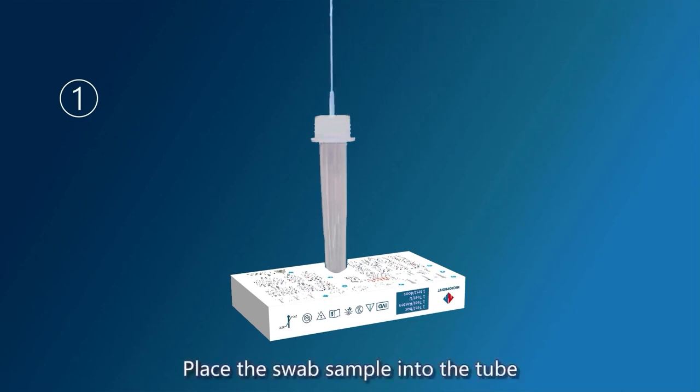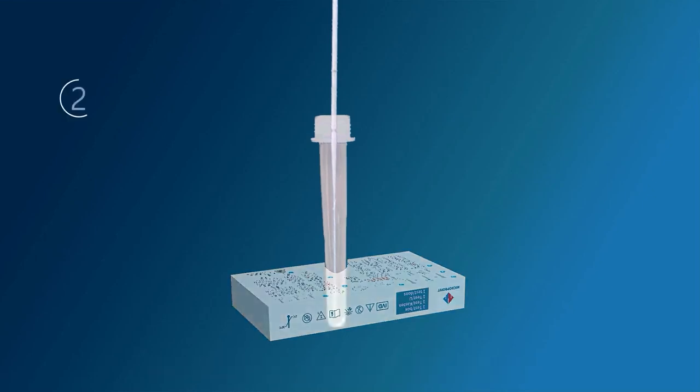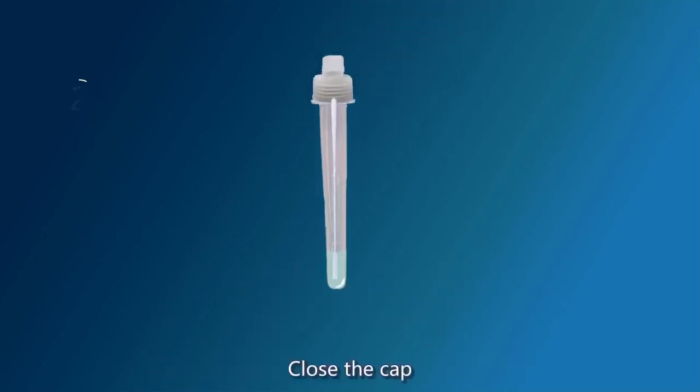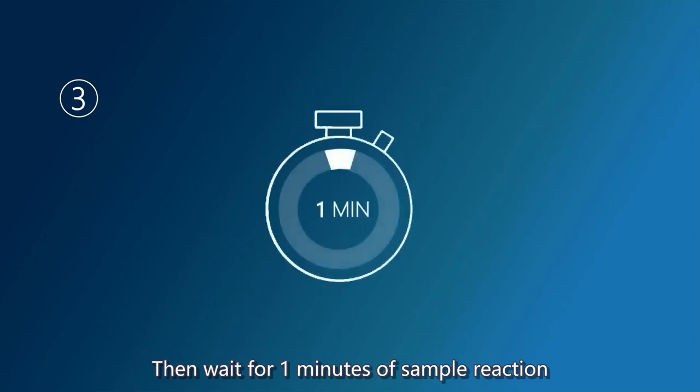Place the swab sample into the tube, then break the swab at the swab node and leave the lower half in the treatment tube. Close the cap, squeeze the swab 10 times in the test tube, then wait for one minute of sample reaction.